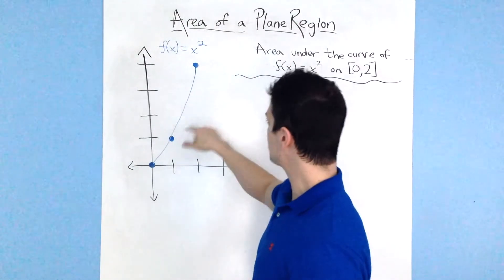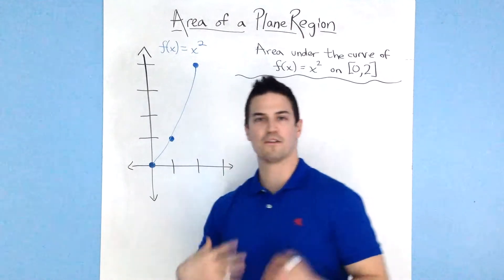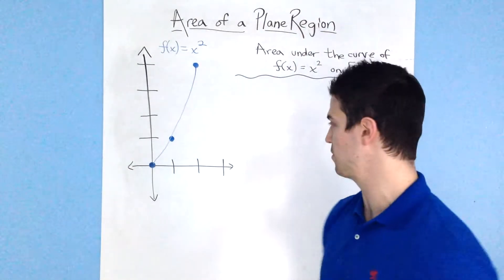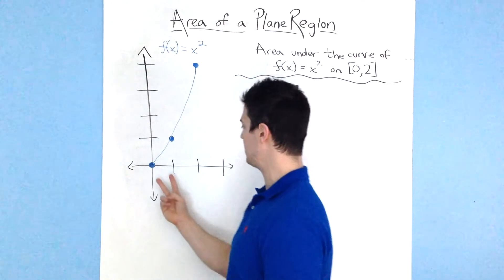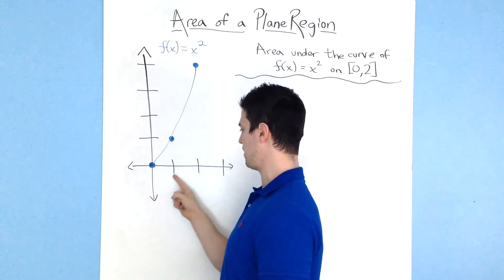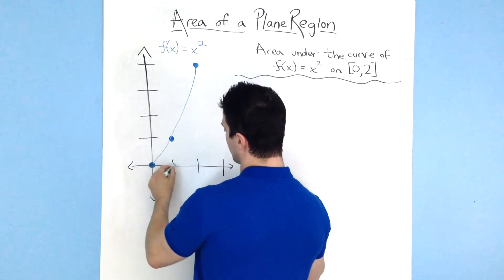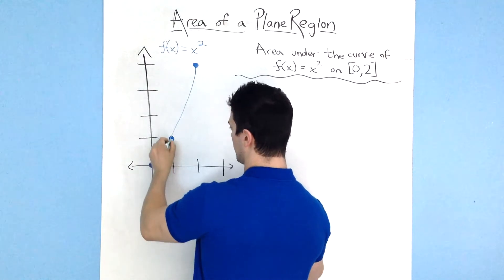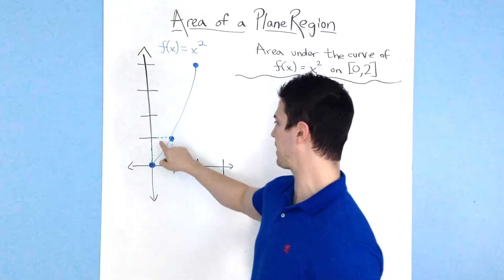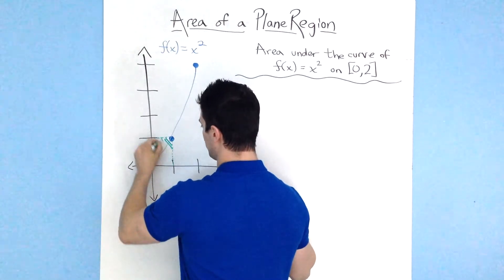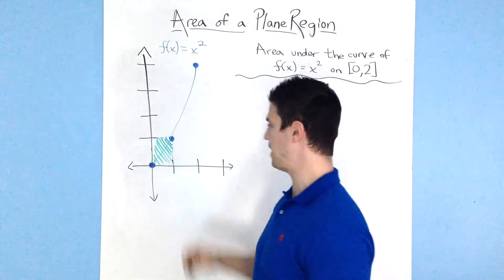The first thing I'm going to do is break this up into rectangles based on a certain interval. Since we go from 0 to 2, for this first run I'm just going to use two rectangles with even widths, so each rectangle has a width of 1. I'm going to draw these rectangles up to the curve, and this rectangle will include a little extra area above the curve. So this gives us an upper bound estimate, but it's simple enough to calculate.